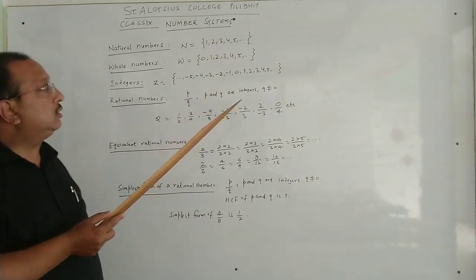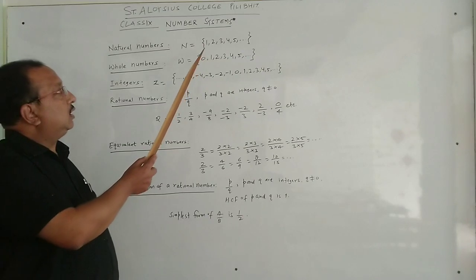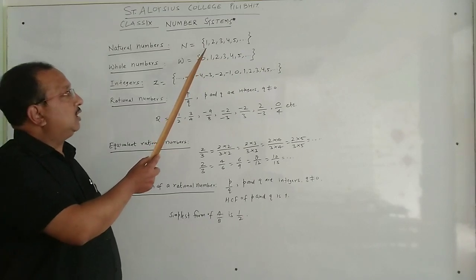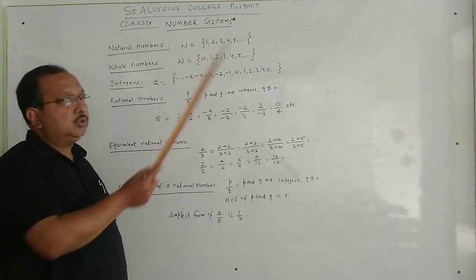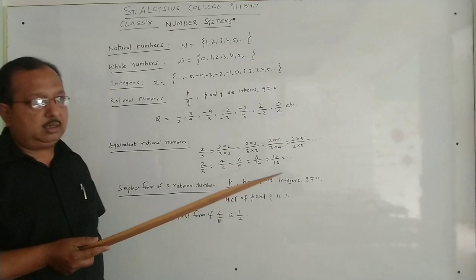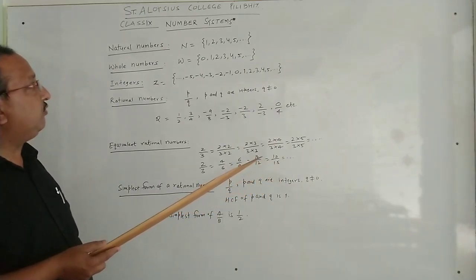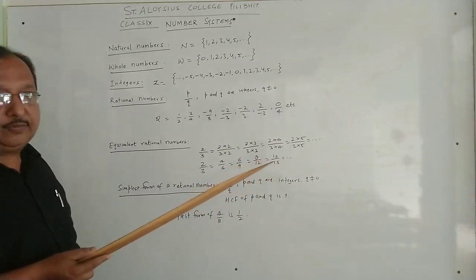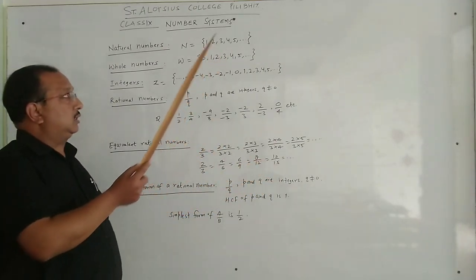Clearly, you can see that the least natural number is 1 and there is no biggest natural number. And there are an infinite number of natural numbers.